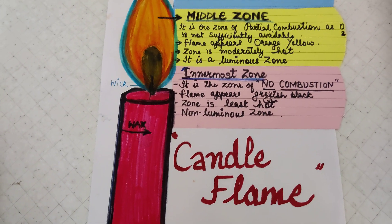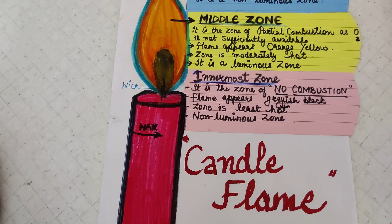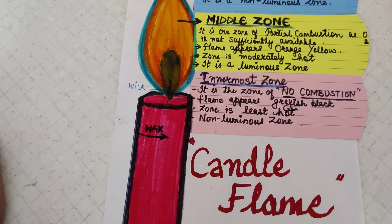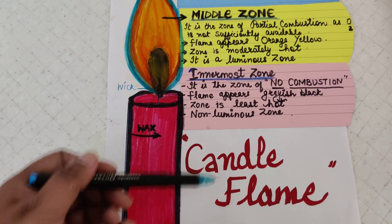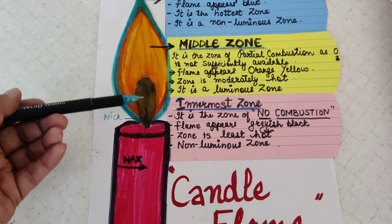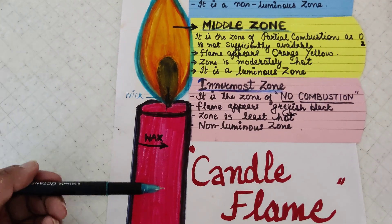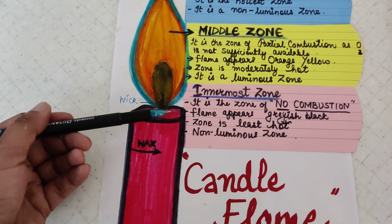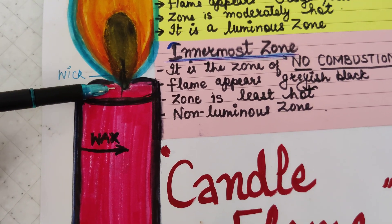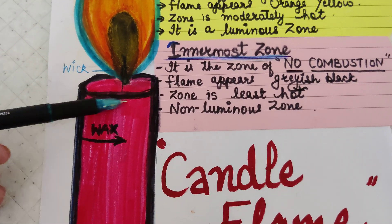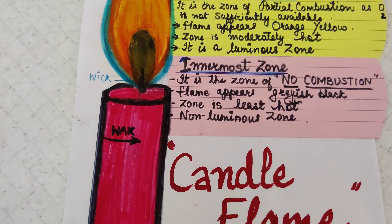We are going to take up another topic from class 8 - the candle flame. First, understand what basically a flame is. Flame is the region where the combustion of fuel takes place. In the case of a candle, the fuel is the wax, which melts and travels up the wick portion. When the wick is lighted, the fuel reaches in vaporized form and the flame is produced.